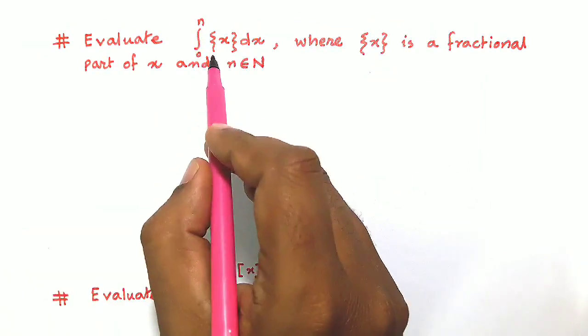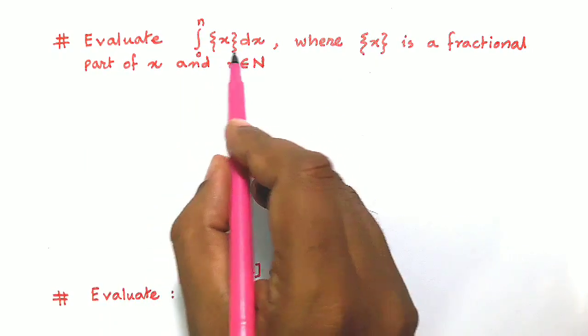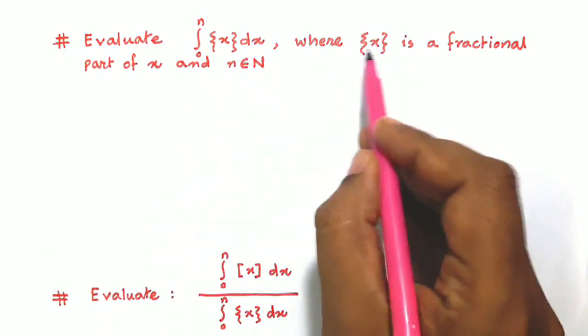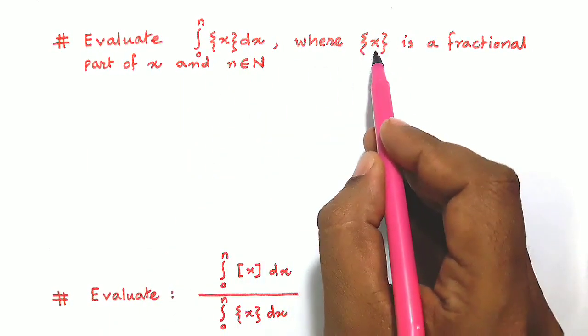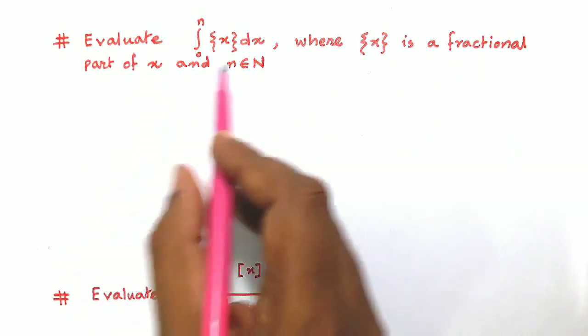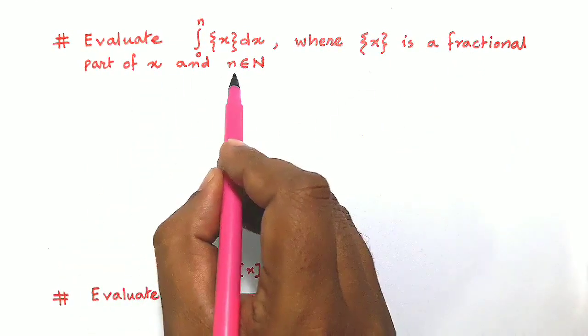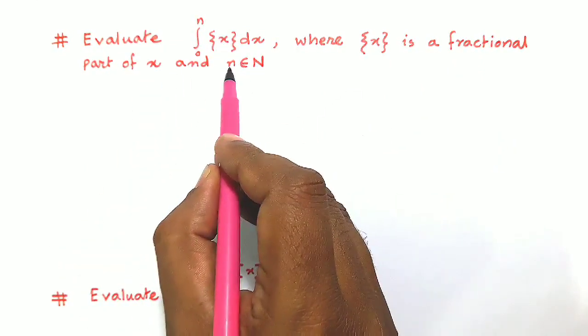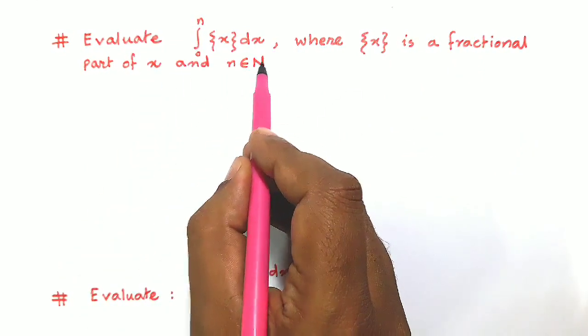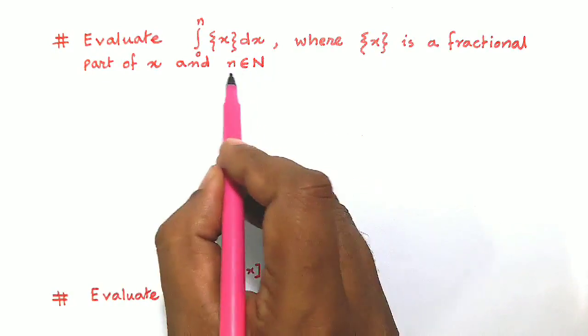Now evaluate integration from 0 to n of the fractional part of x dx, where the curly bracket of x denotes the fractional part of x, and n belongs to capital N, the set of natural numbers.